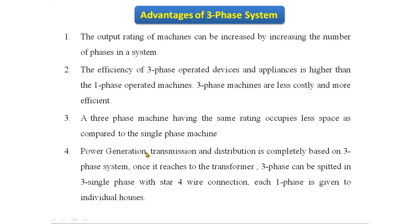Power generation, transmission, and distribution is commonly based on the three-phase system. Once it reaches the transformer, the three-phase system can be split into three single phases using a star connection with a four-wire connection, and each single phase is given to individual houses.